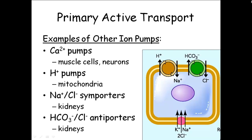Every cell in your body has the sodium-potassium pump, so that's the best and most common example of primary active transport. By primary, what we're talking about is that the actual pump protein not only moves the ions but breaks the ATP down — one protein is doing both, breaking ATP down to get the energy to move the ions.